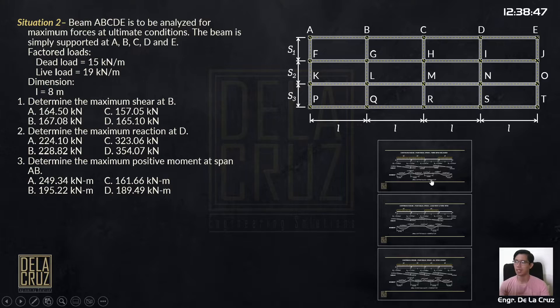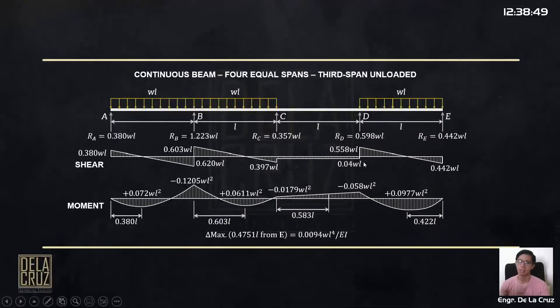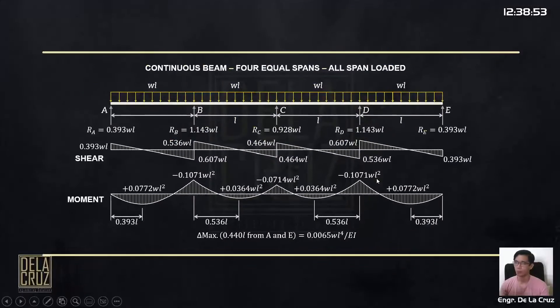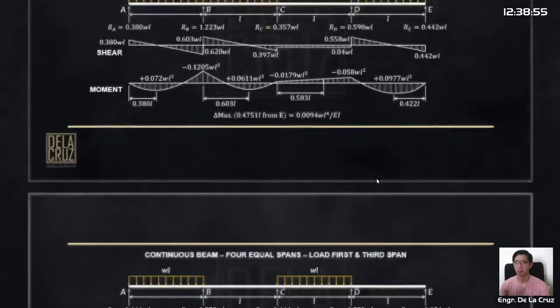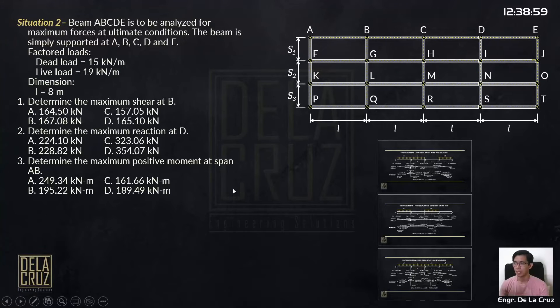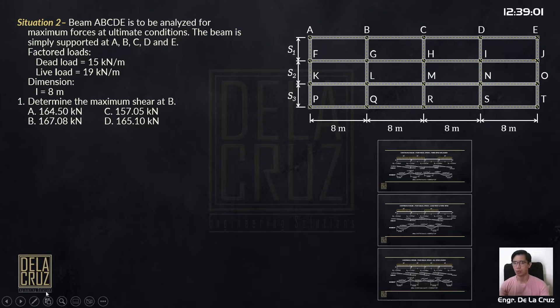Now, we will use here the given diagrams. Binigay na yung shear and moment diagrams here. Walang problema. Check lang natin yung mga values dito. Alright. Unahin natin part 1. Maximum shear at B.